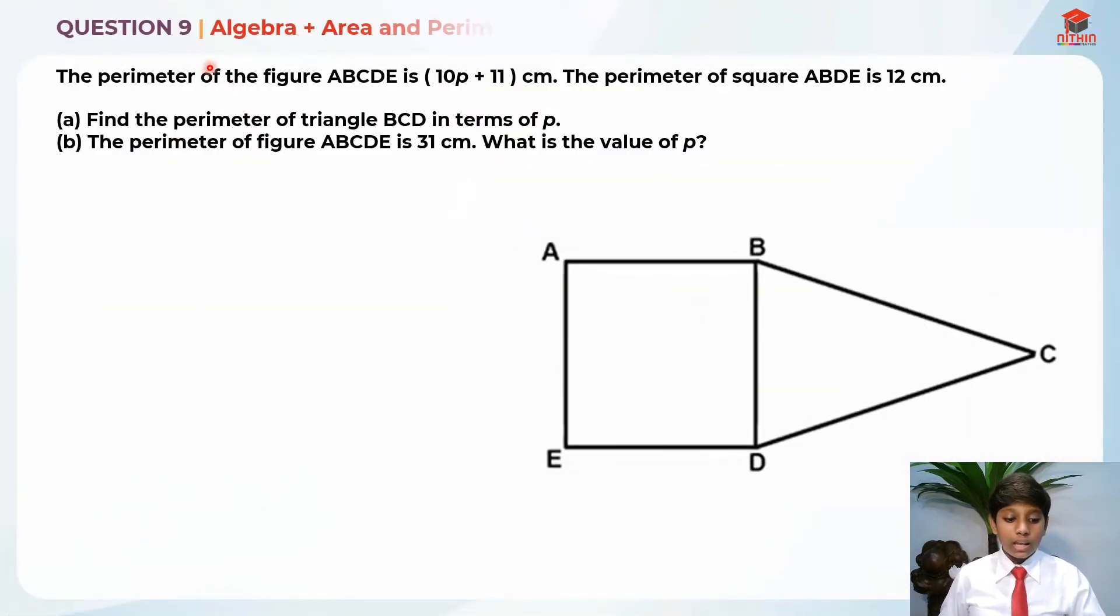This over here is question 9 and this question is testing us on algebra and area and perimeter. Let's read the question for part A first. The perimeter of the figure ABCDE is 10p plus 11cm. The perimeter of square ABDE is 12cm. Part A, find the perimeter of triangle BCD in terms of p.